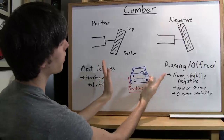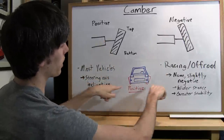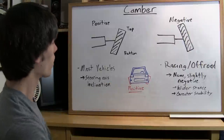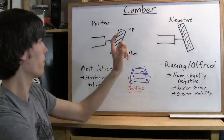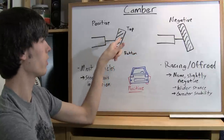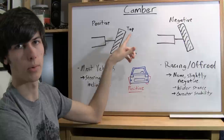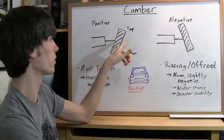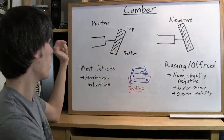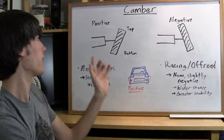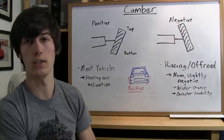Negative camber is the opposite — the top of the tires will be inside and the bottom of the tires will be going out. Most vehicles use a very slight amount of positive camber. One thing I should note is that these are very exaggerated; it's not going to be anywhere near this on the majority of cars. This is just so you can get the idea. Most vehicles will have a slight amount of positive camber, and that has to do with the steering axis inclination.